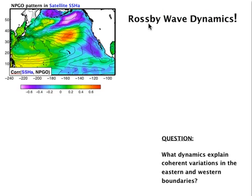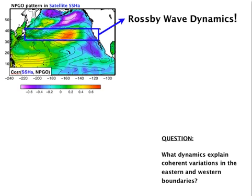The question arises: what dynamics explain coherent variations in the eastern and western boundaries with this three-to-four year lag between the NPGO and the Kuroshio-Oyashio Extension? A candidate for these coherent changes is Rossby wave dynamics, since Rossby waves typically have westward propagation, and therefore this westward phase lag could be associated with Rossby waves. To check this hypothesis, we'll take a transect along latitudes 32 to 40 degrees and make a time-longitude plot of this region.